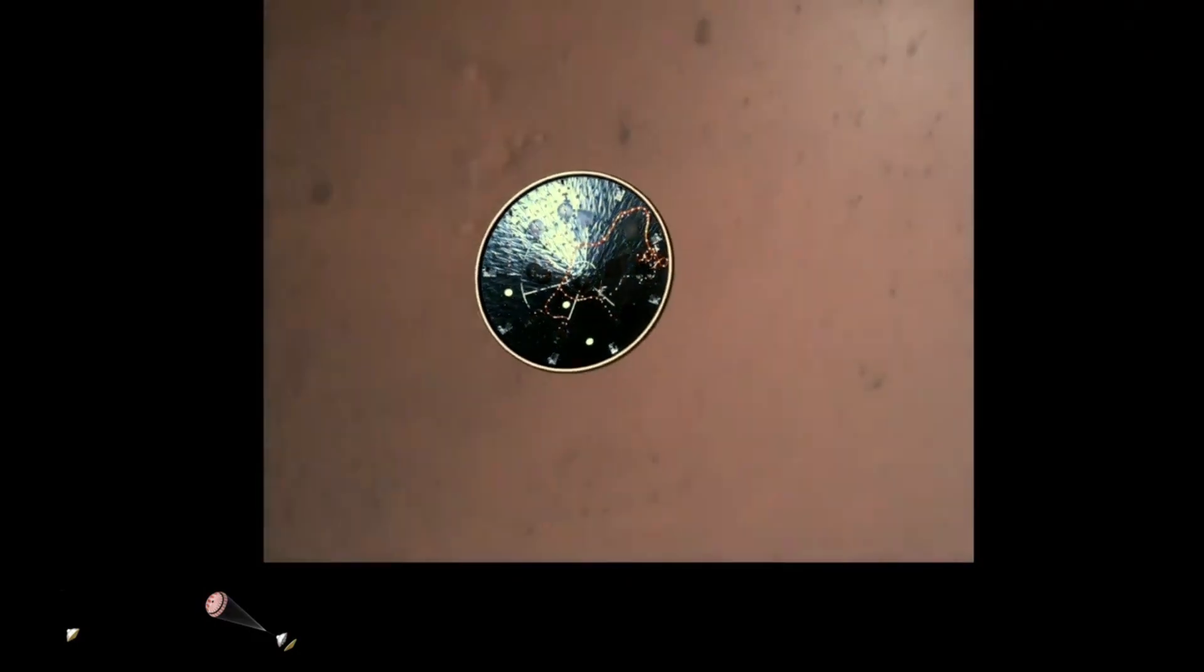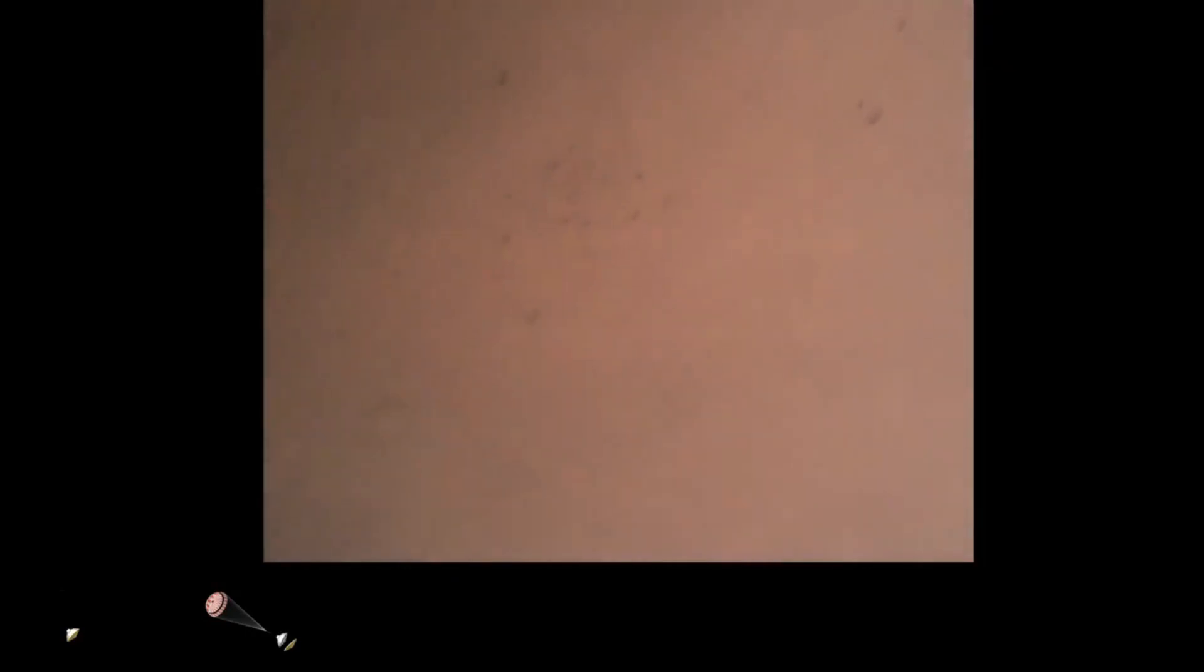Heat shield set. Perseverance has now slowed to subsonic speeds, and the heat shield has been separated. This allows both the radar and the cameras to get their first look at the surface. Current velocity is 145 meters per second at an altitude of about 9.5 kilometers above the surface.